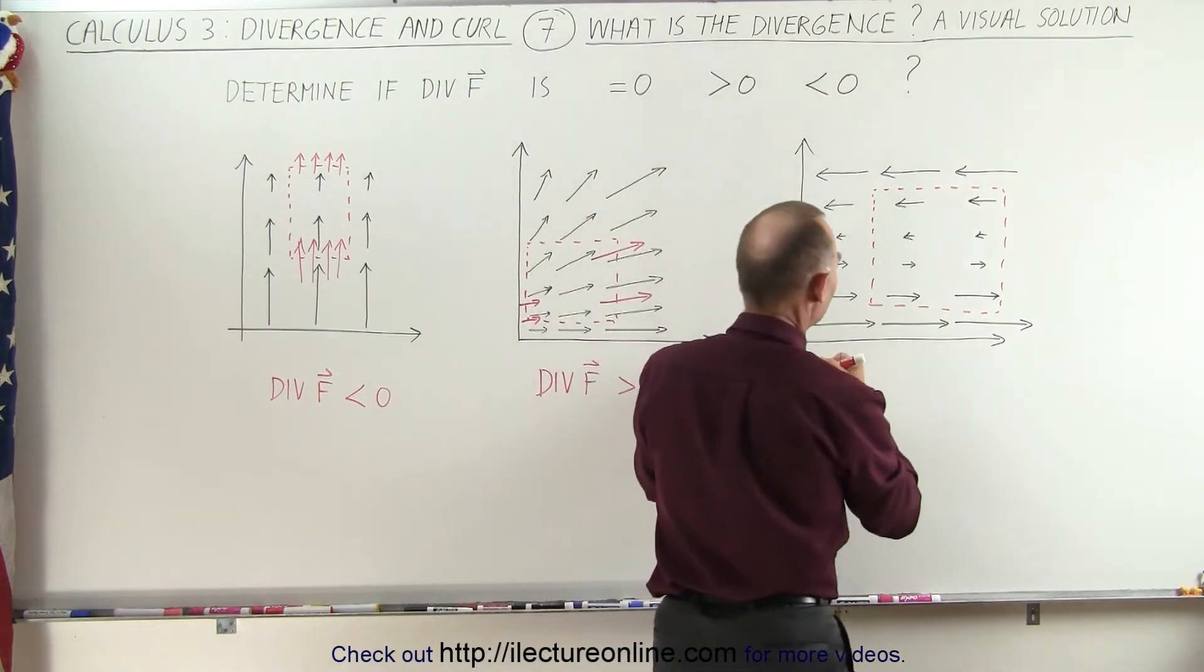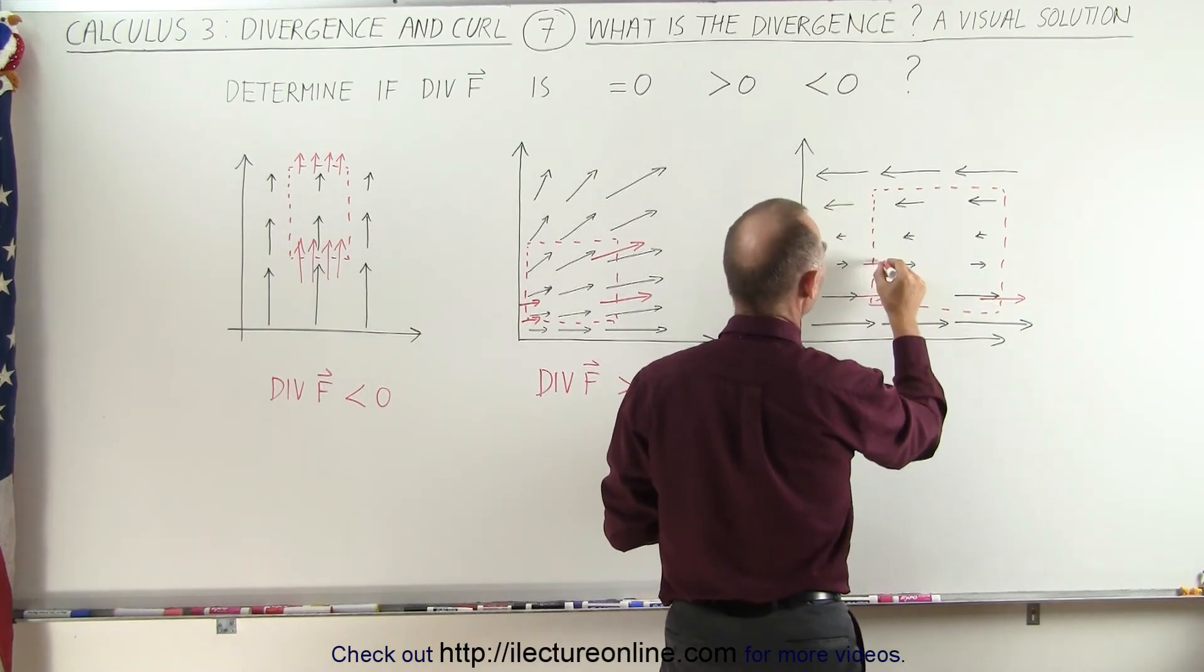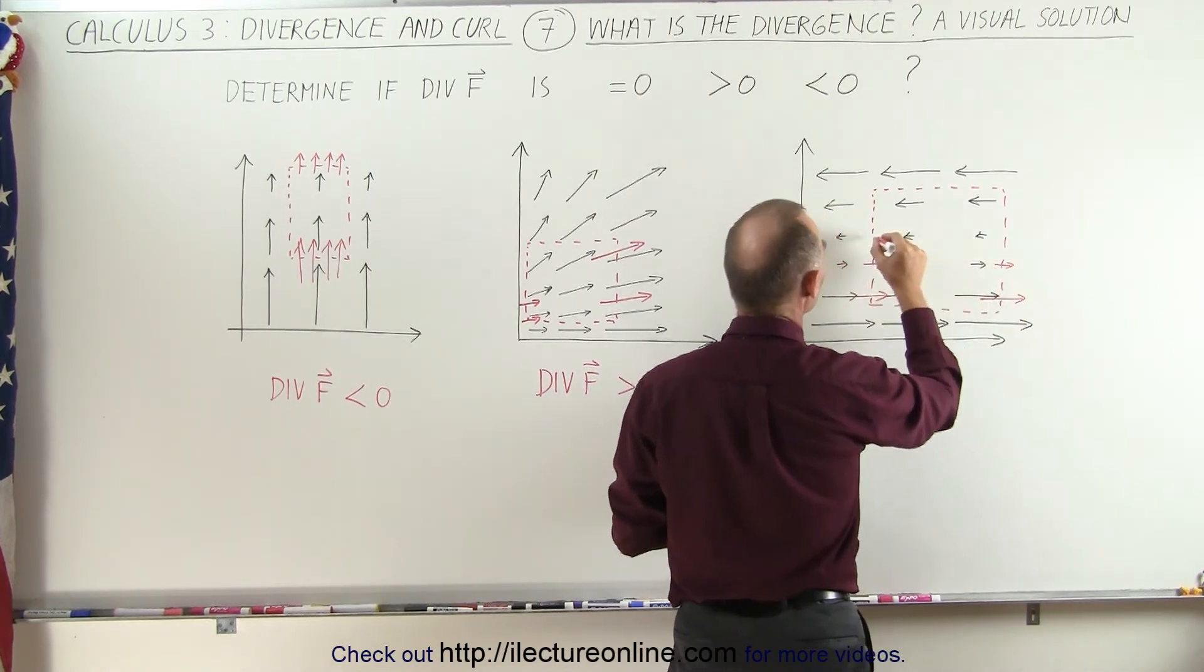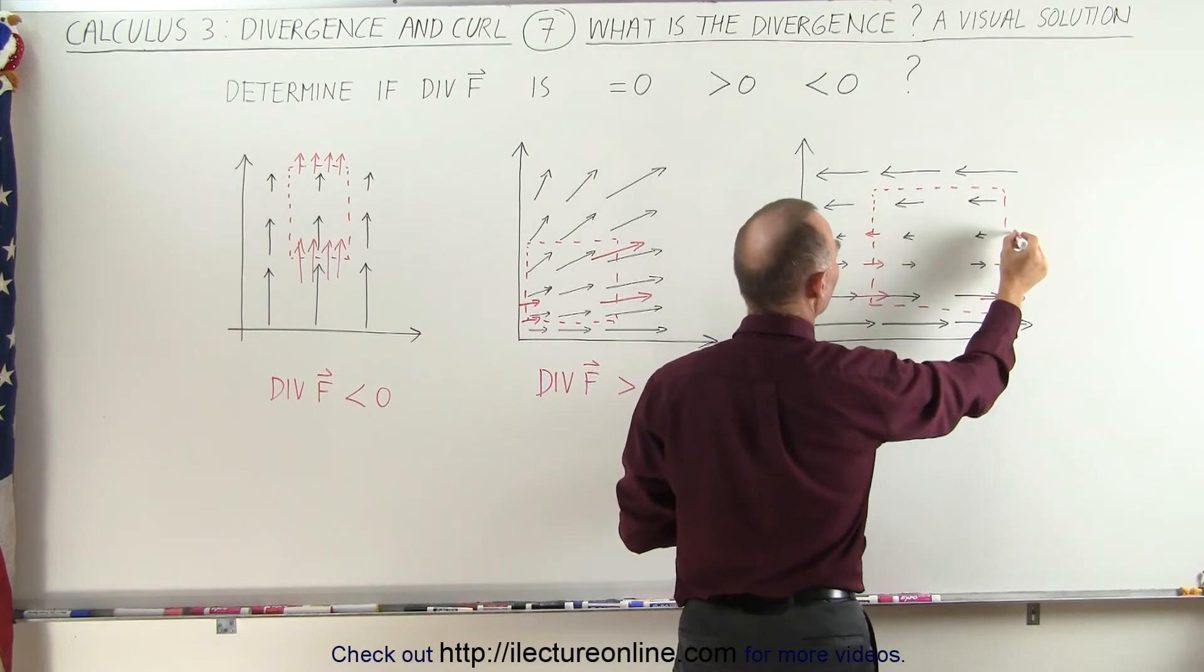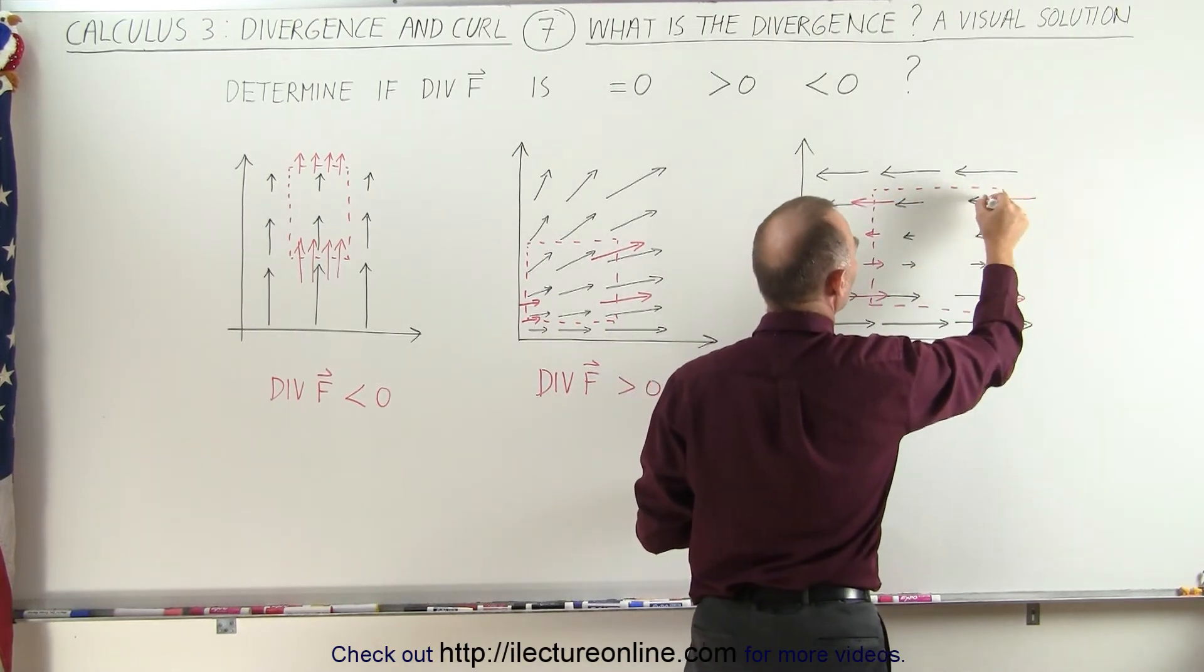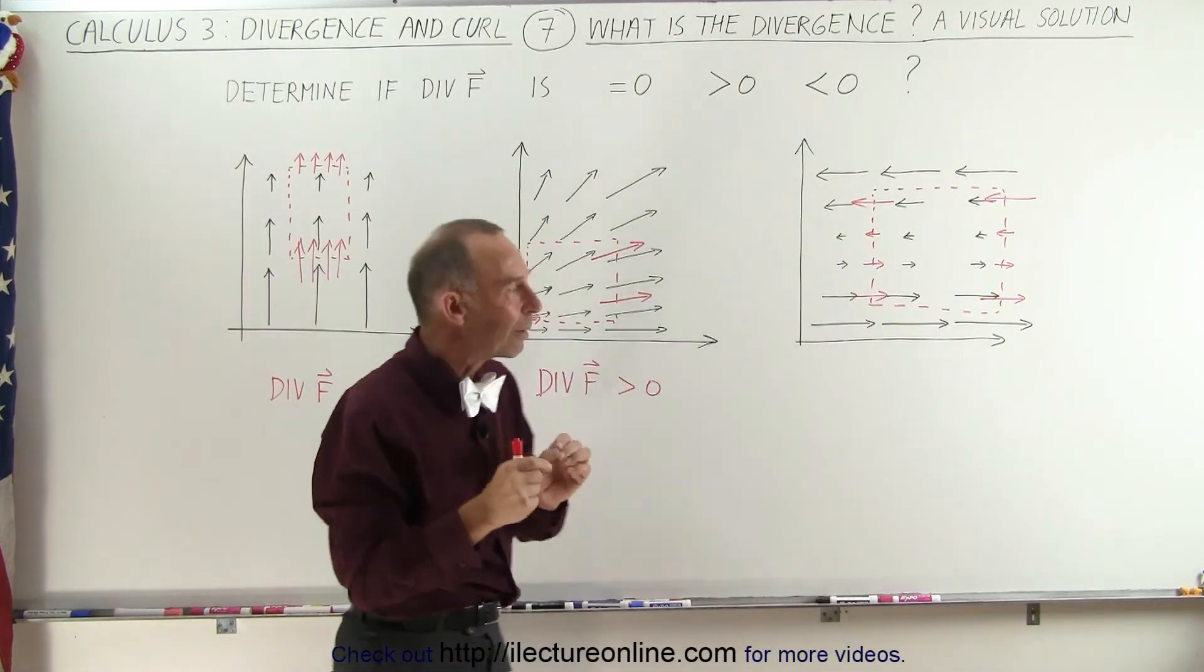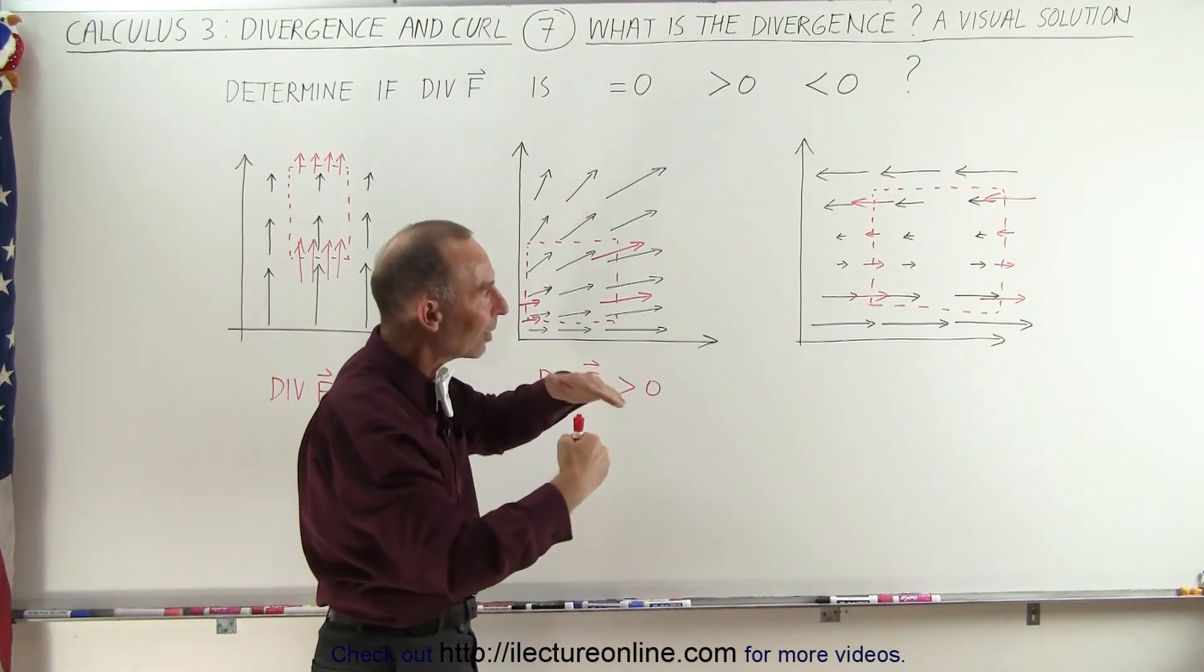Notice on the left side here, we have this much flux going in, we have the same amount going out. Here we have less going in, but less coming out. Here we have some going to the left, and here's some to the left. Here it's to the left, but more. Here's to the left, more. Notice that in all cases, the same amount of flux goes into the box as comes out of the box, even though it changes direction.